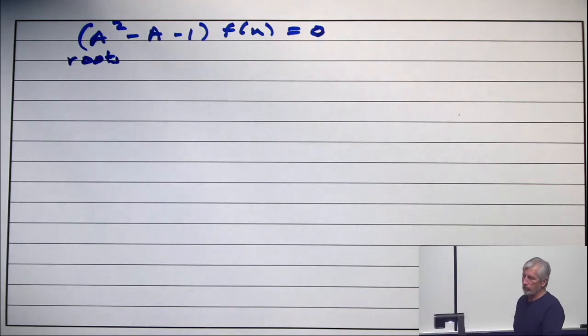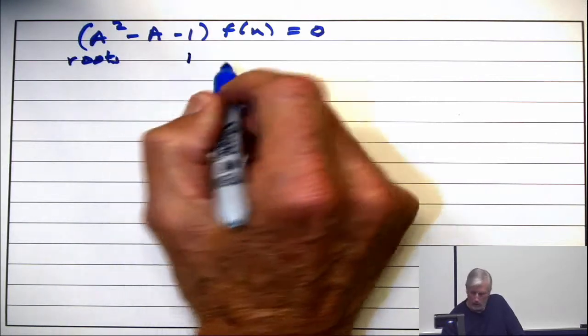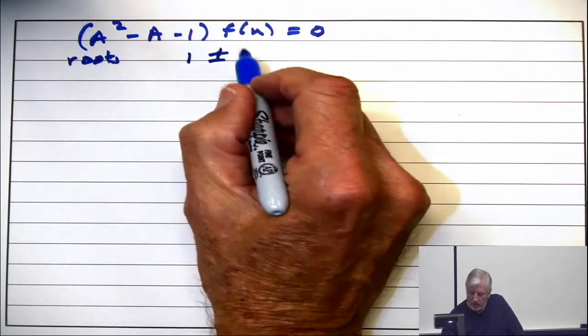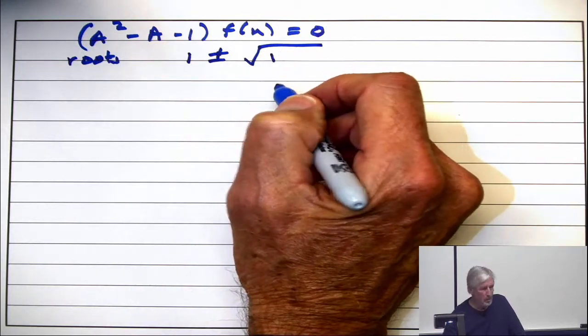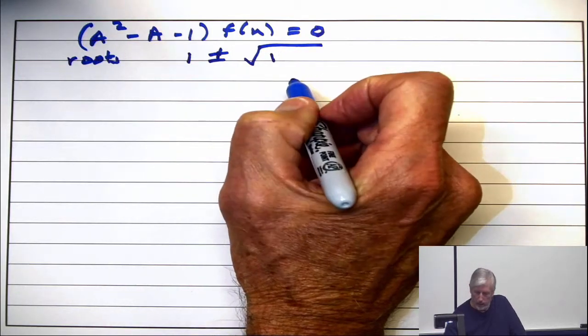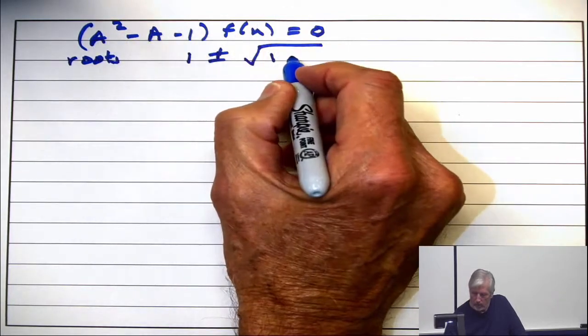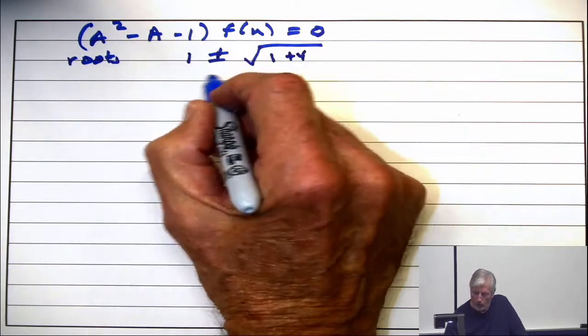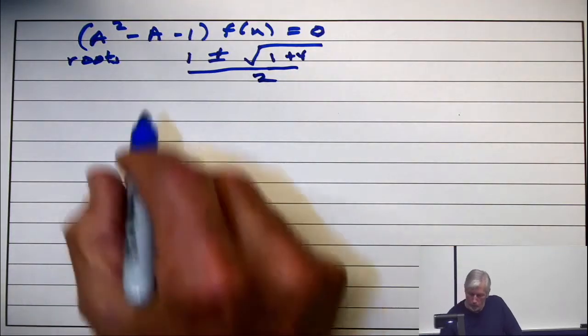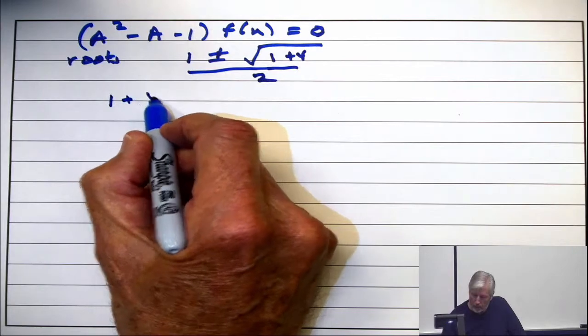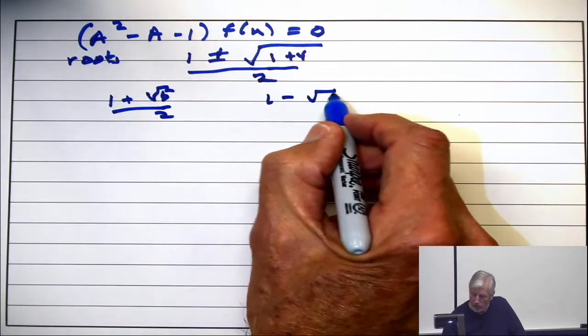Remember from high school? So minus B, 1, plus or minus the square root of B squared, 1 squared, minus 4AC, 4 times 1 times minus 1 becomes plus 4 over 2A. So there are two roots, 1 plus the square root of 5 over 2, and 1 minus the square root of 5 over 2.